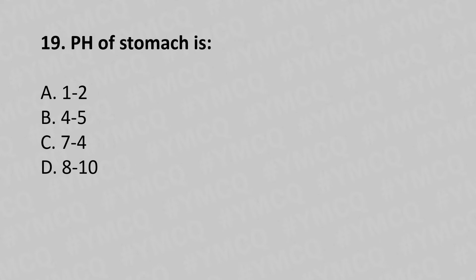Now let's move to question number 19. pH of stomach is: Option A: 1 to 2. Option B: 4 to 5. Option C: 7 to 4. Option D: 8 to 10. And the answer is Option A: 1 to 2.